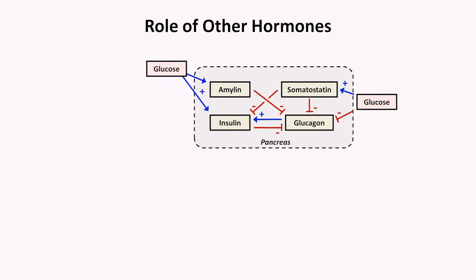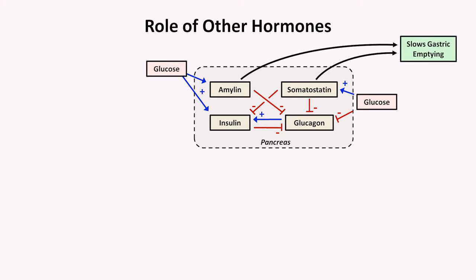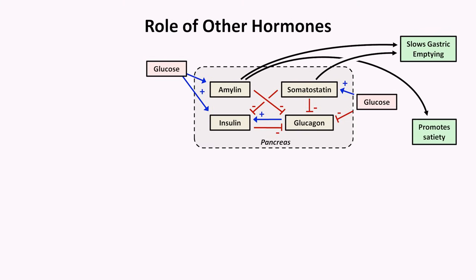In addition to the regulatory role within the pancreas, amylin and somatostatin have other interesting actions. Both slow down gastric emptying and gut motility in general, which helps to blunt postprandial hyperglycemia. In addition, amylin promotes the sensation of satiety in the brain.